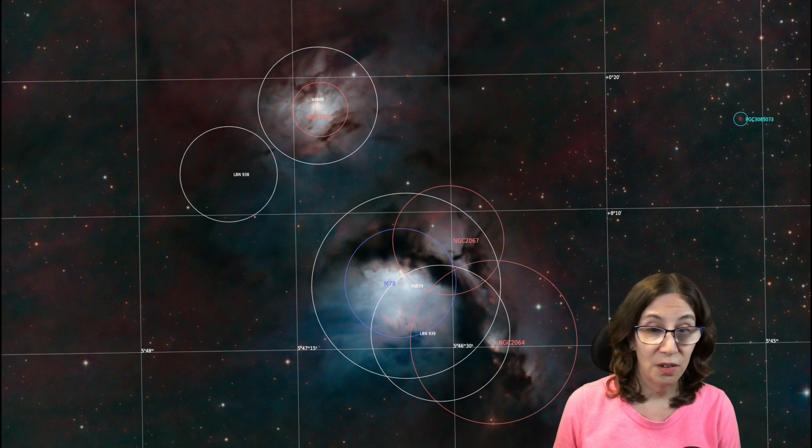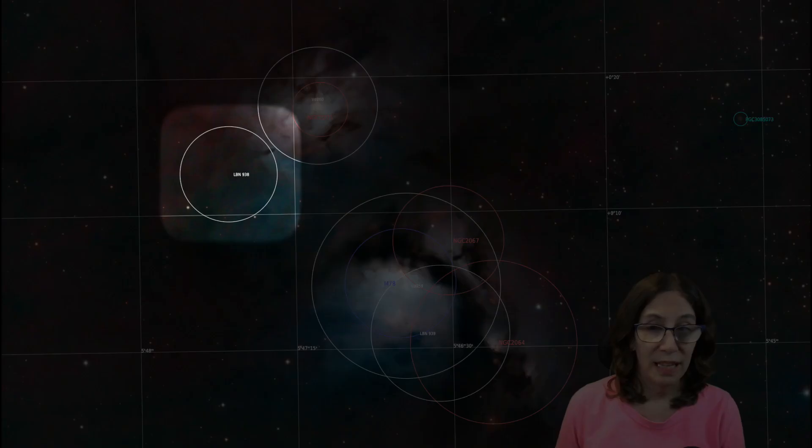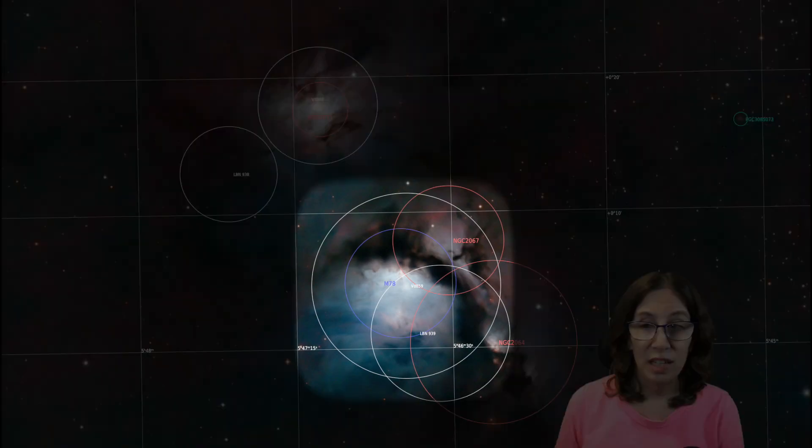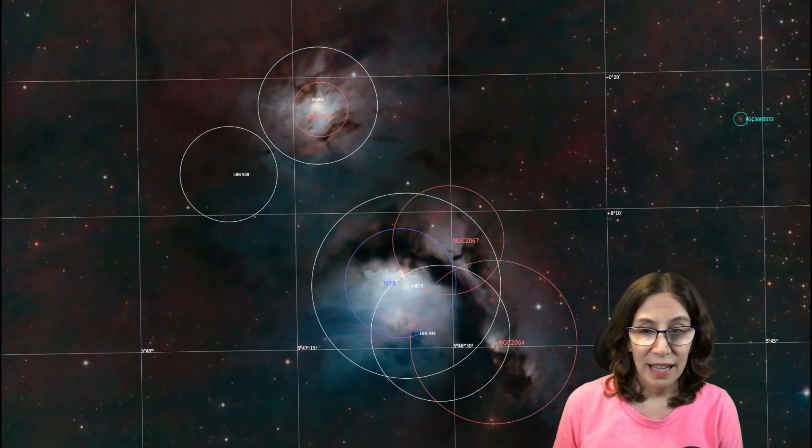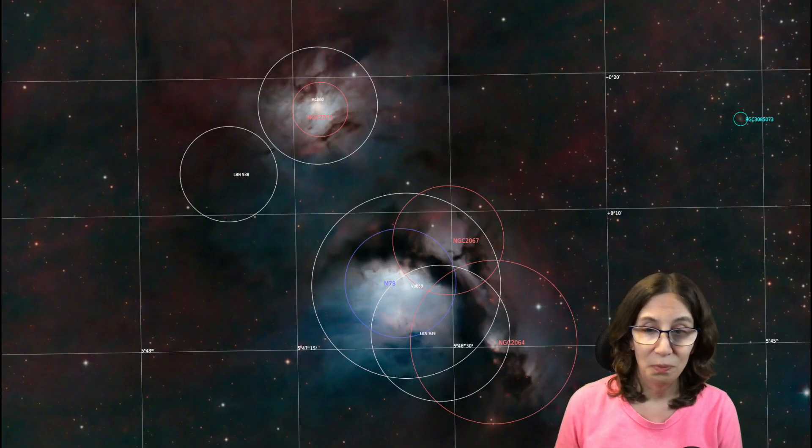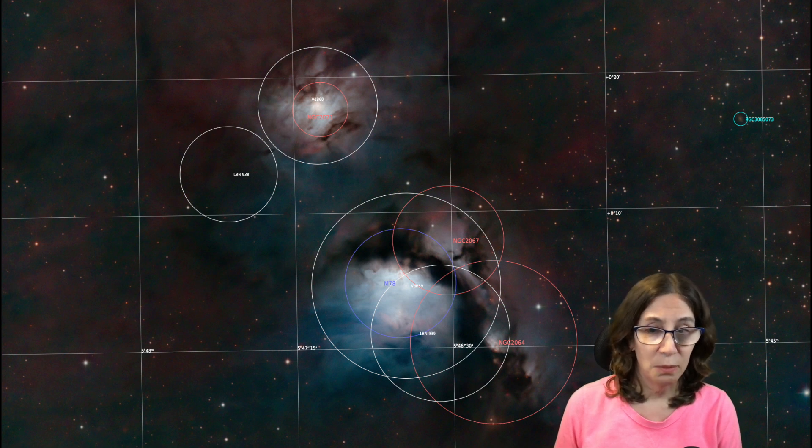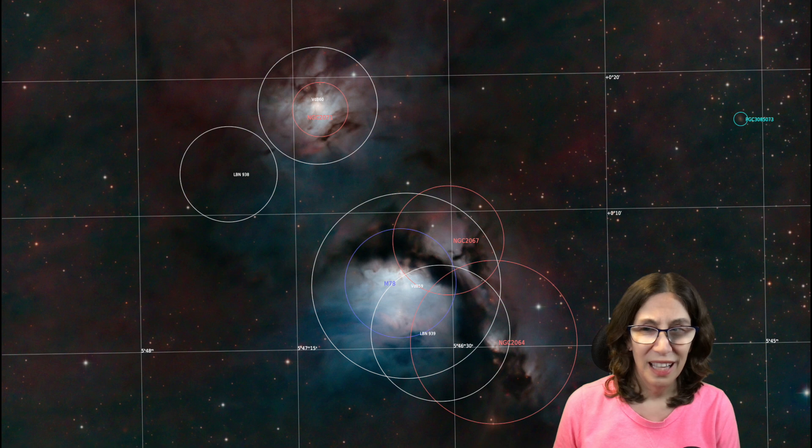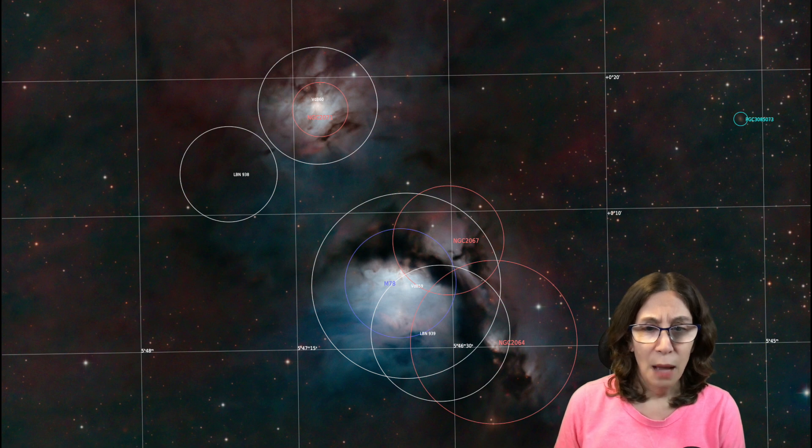M78 itself is also known as NGC 2068. But other cataloguers apparently wanted to leave their stamp on the region. We also have LBN 938 and 939, as well as VDB 59 and 60. We even have a galaxy annotation for PGC 3085073. Granted, the VDB cataloguers are just referring to M78 and NGC 2071. And it's not really clear to me what LBN 938 is actually referring to, but clearly, this is an area of the sky that's gotten a lot of attention.